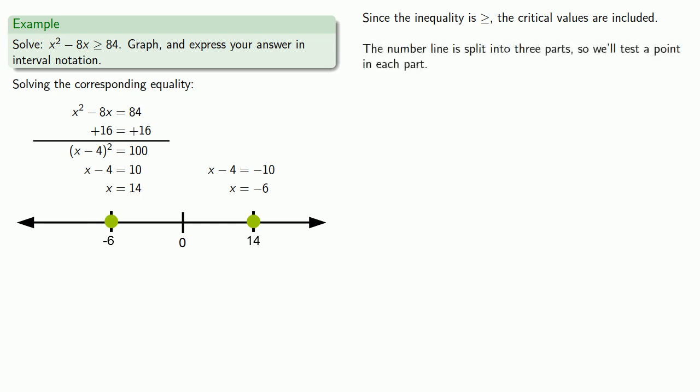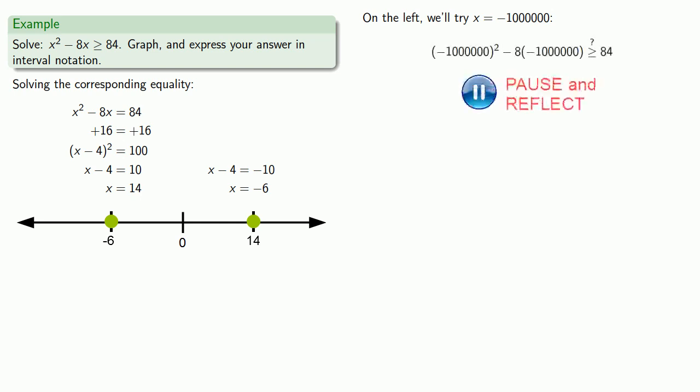The critical values split the number line into three parts, so we'll test a point in each part. On the left-hand side, we'll try x equals minus 1 million, substituting that into our inequality. This is a true statement, so we do include this interval.